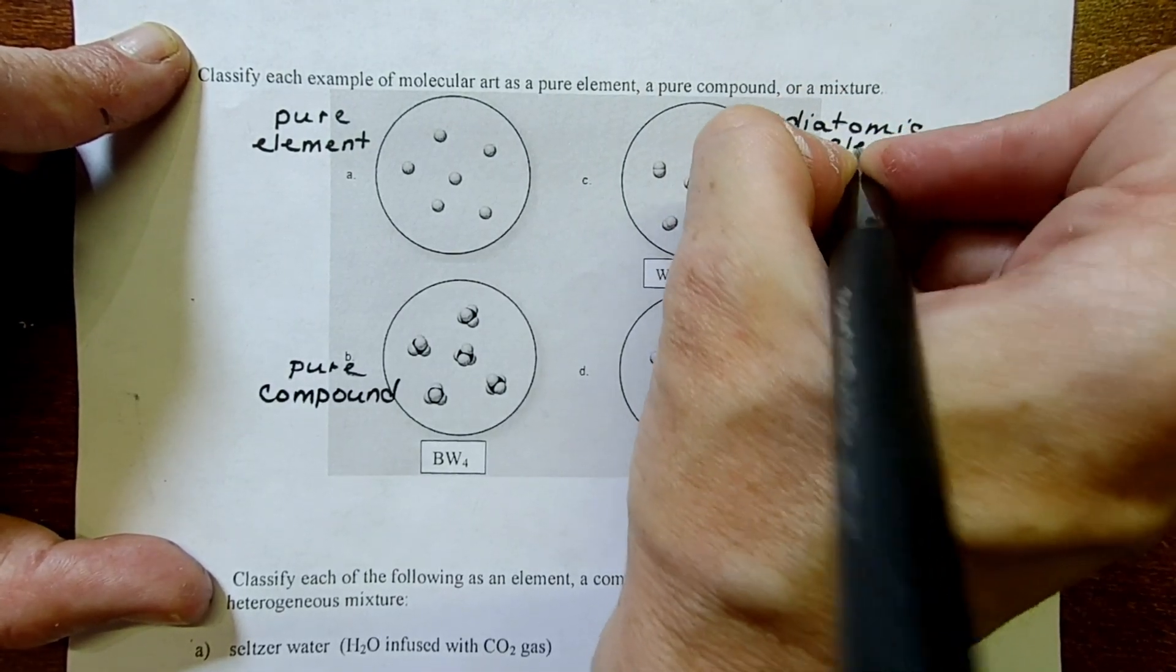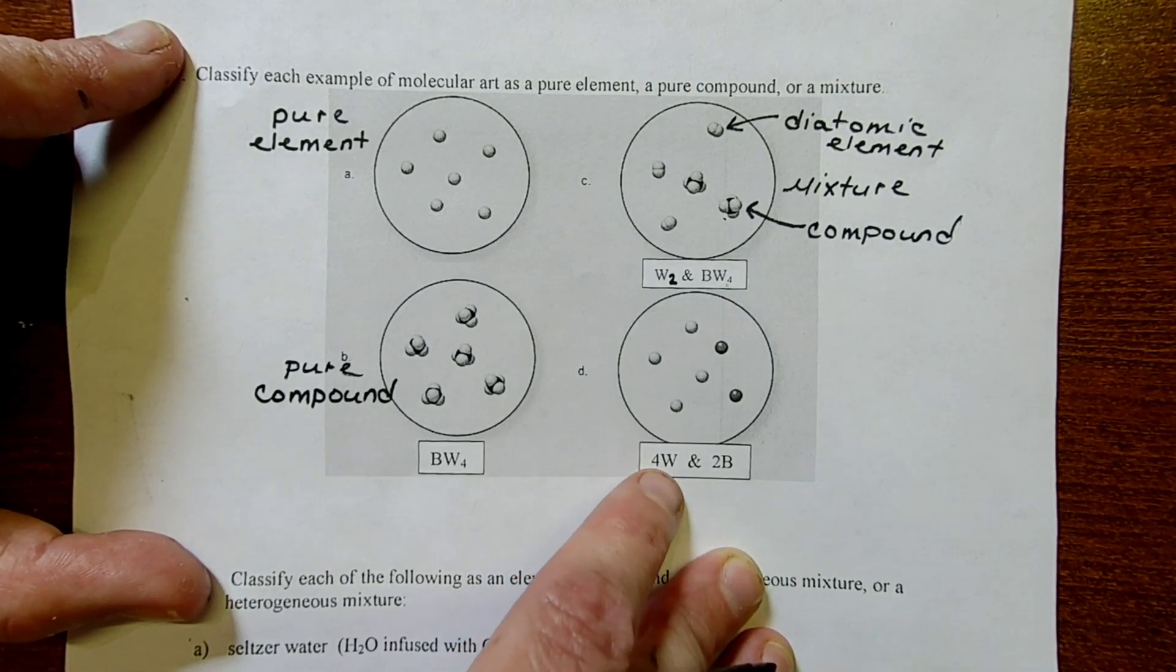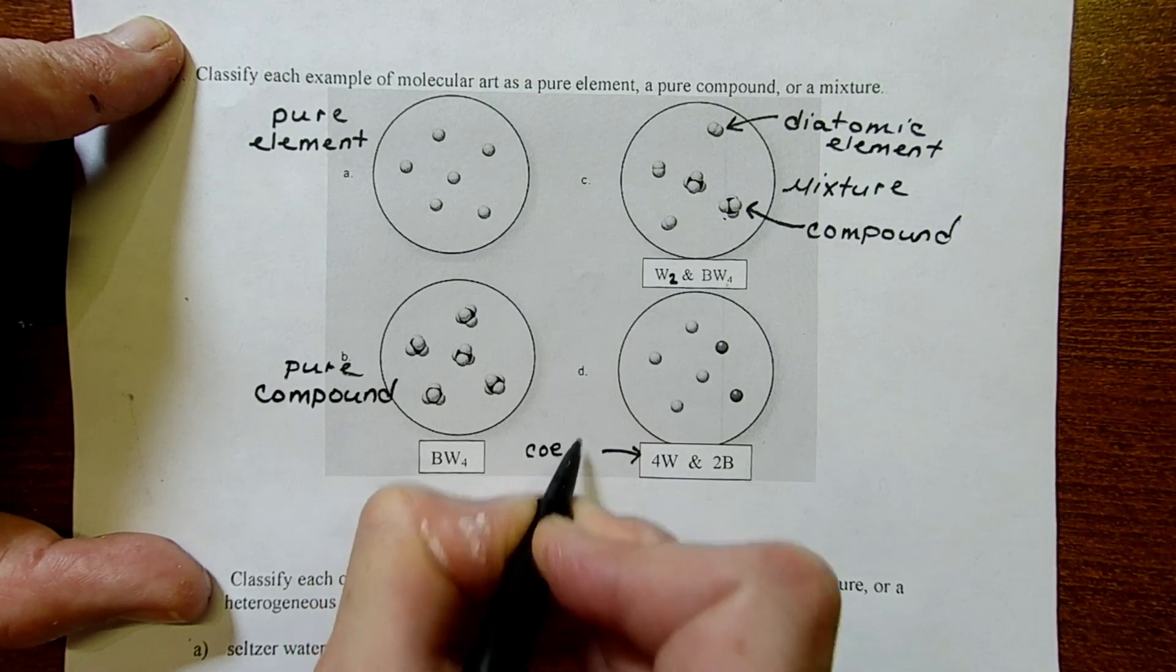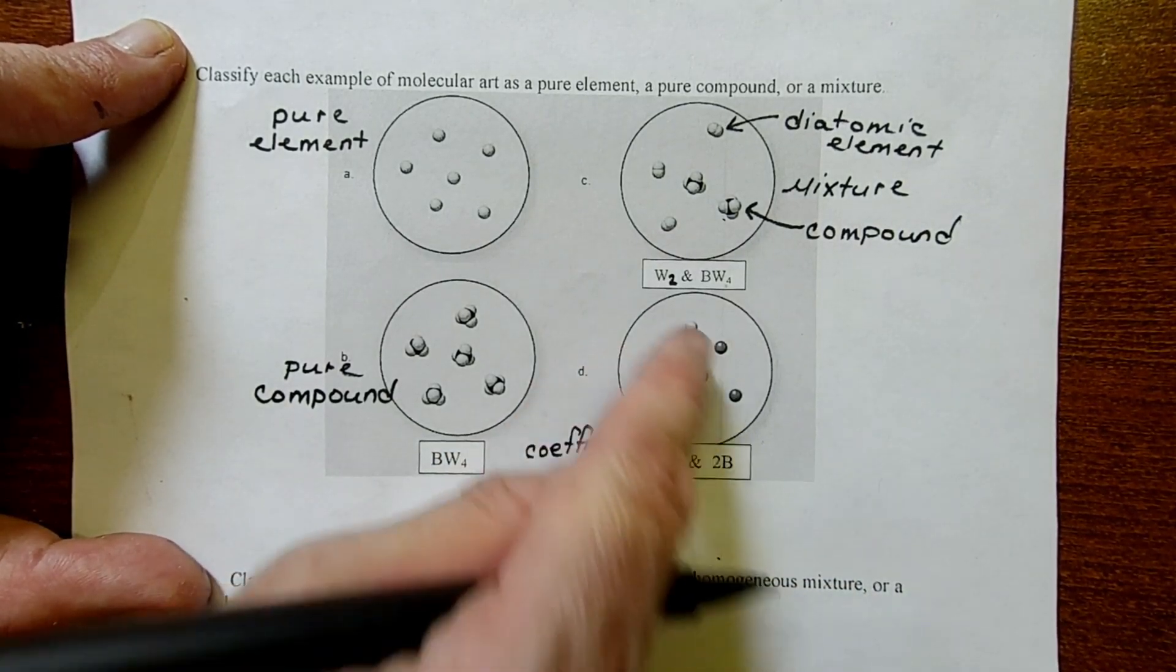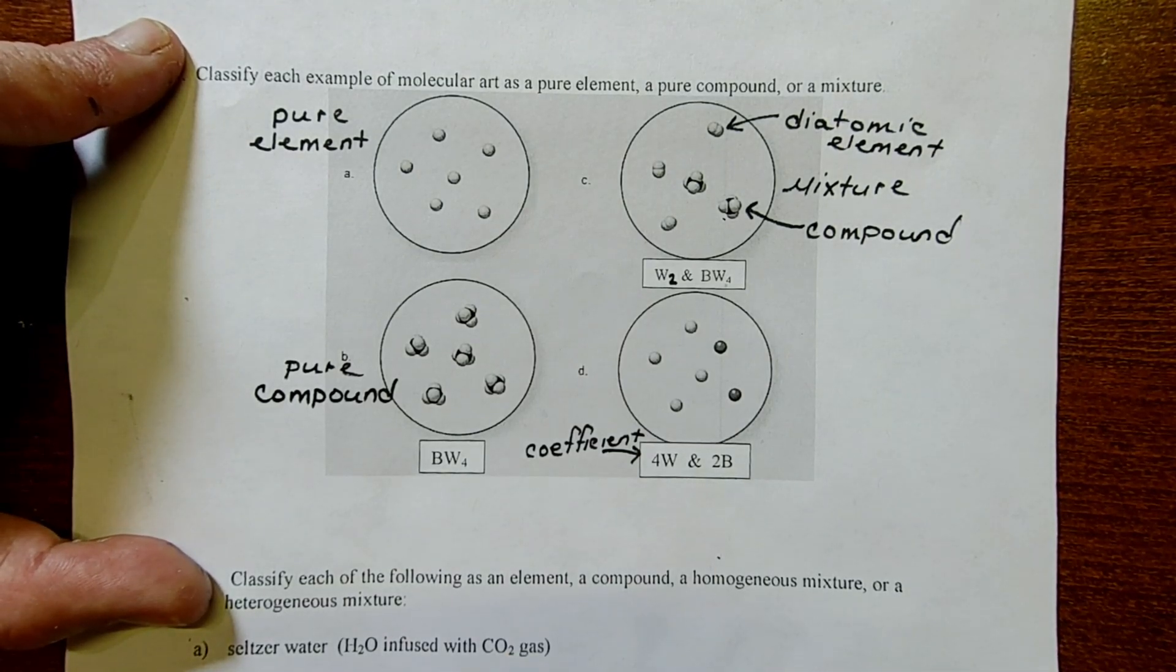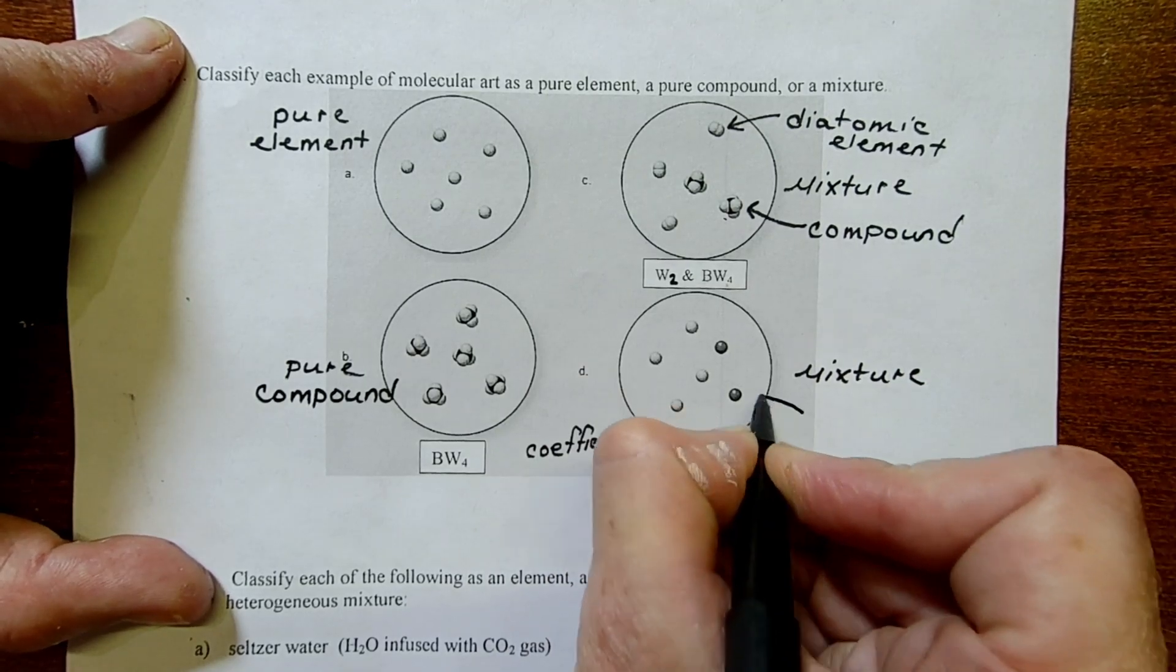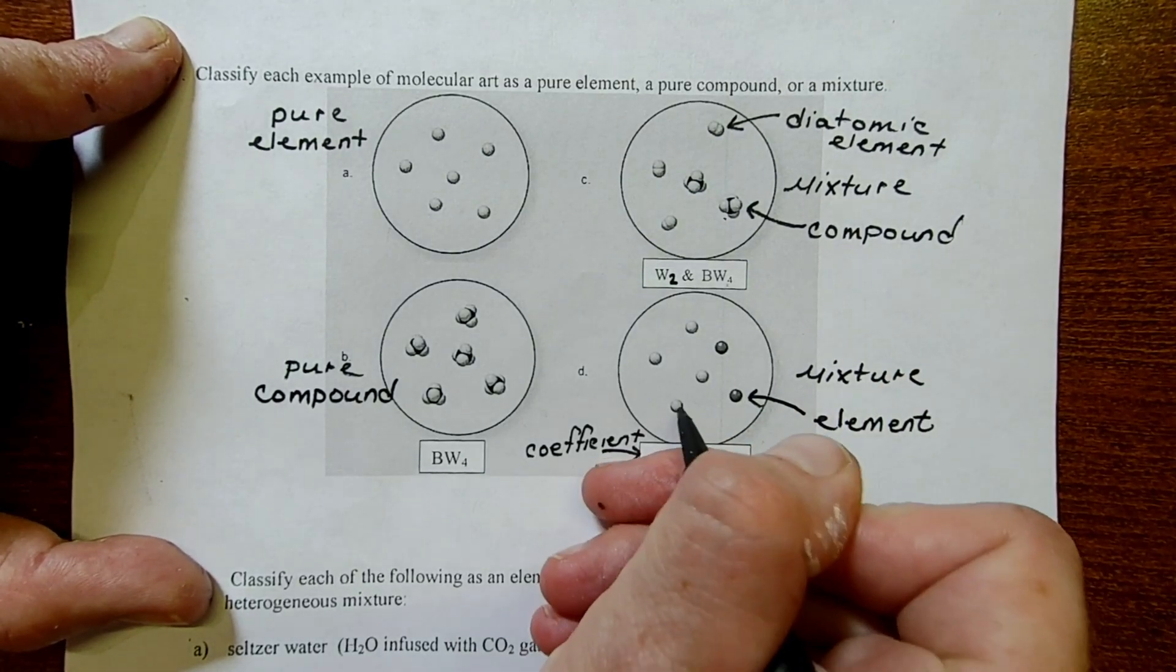Last but not least, letter D. We have four single white spheres. When you see a four or any kind of number out front, remember I just mentioned this number is called a subscript. A number out front is called a coefficient. The coefficient tells you how many there are, not how they're connected. One, two, three, four. We got four white spheres, and two black spheres. The two out front doesn't tell us that they're connected. It's not diatomic. It just tells us how many we have. This is definitely a mixture, because we could physically separate the white from the black. Not that they asked us, but we could also identify these things within the mixture as elements. We have one type of element here, and then another type of element there.